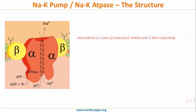Let's start by looking at the structure of the sodium potassium pump, also called sodium potassium ATPase. Essentially it is a heterodimer with two alpha and two beta subunits. The alpha subunit is larger at about 100 kilodaltons, while the beta subunit is smaller at about 55 kilodaltons.